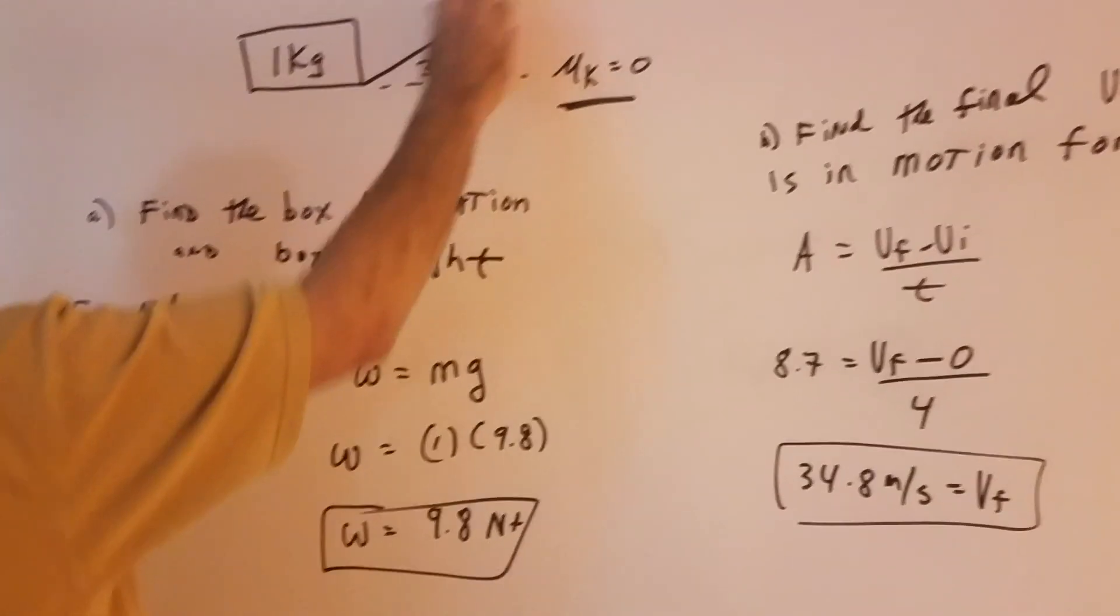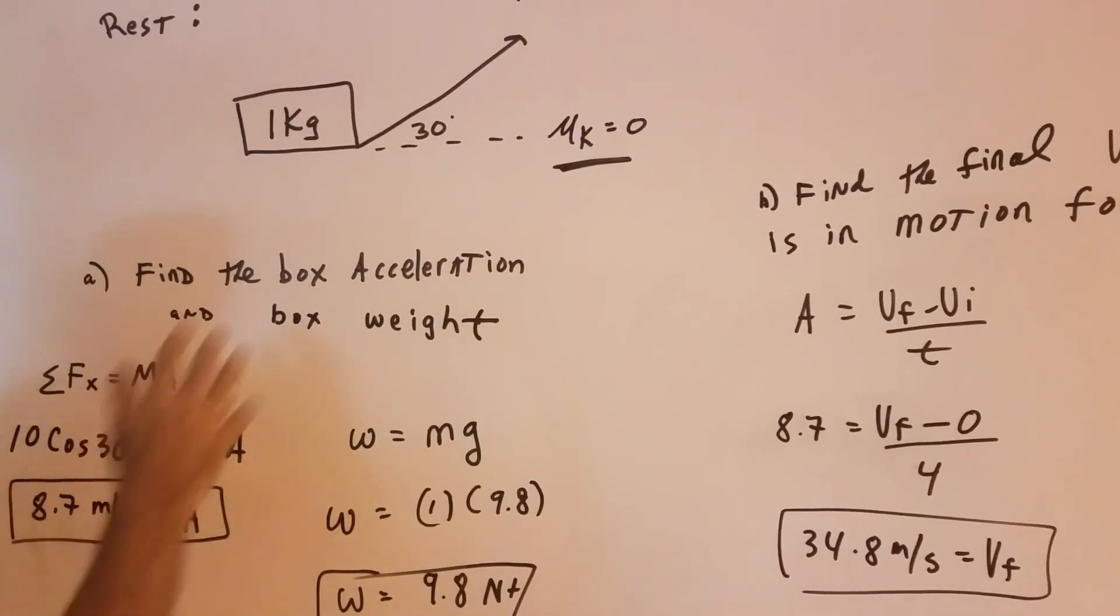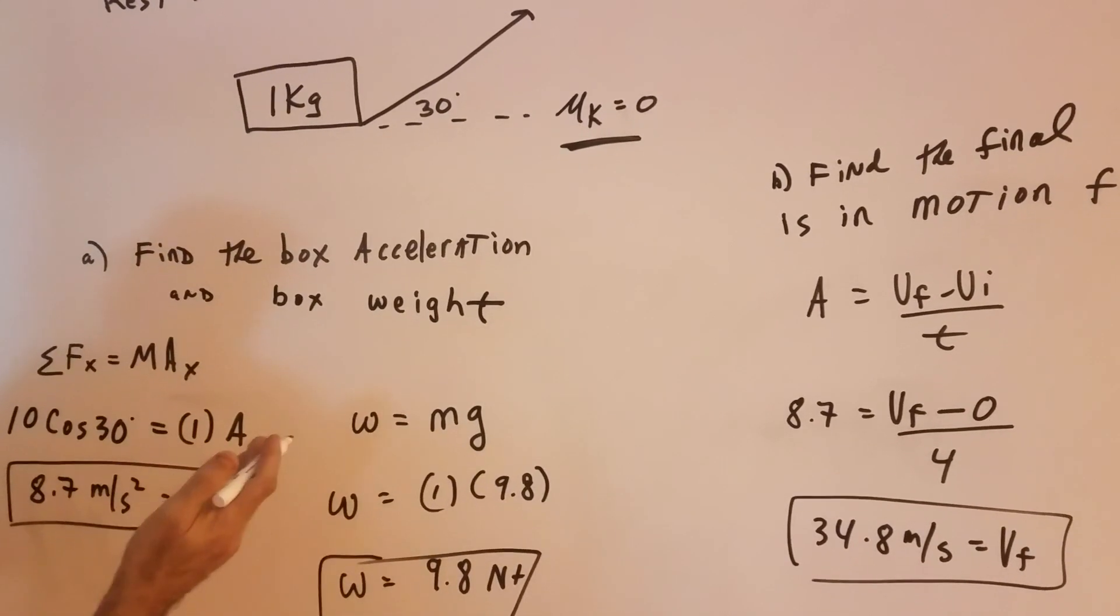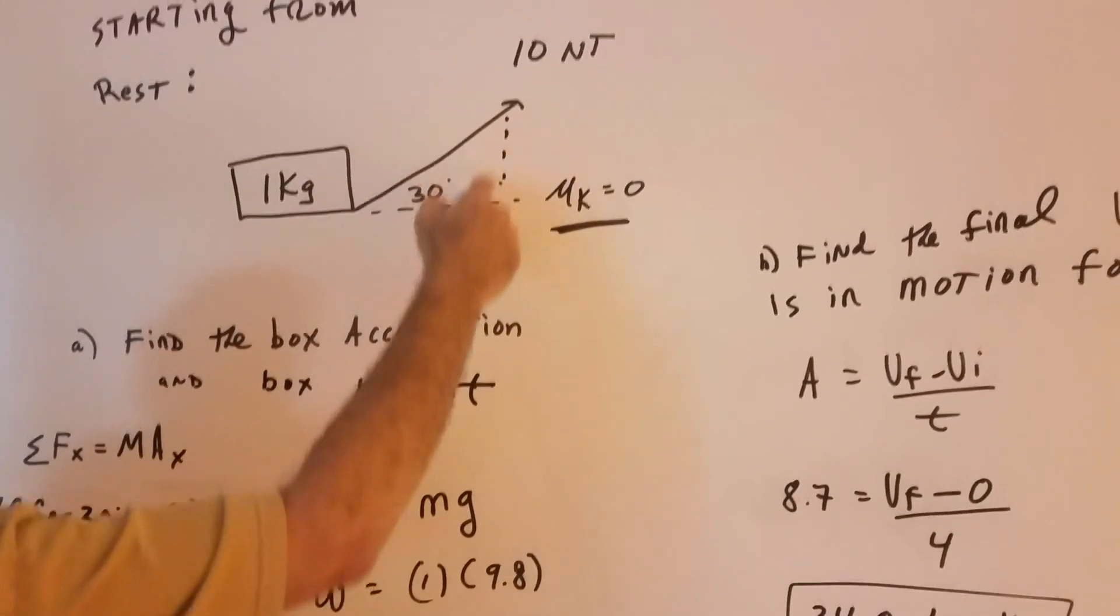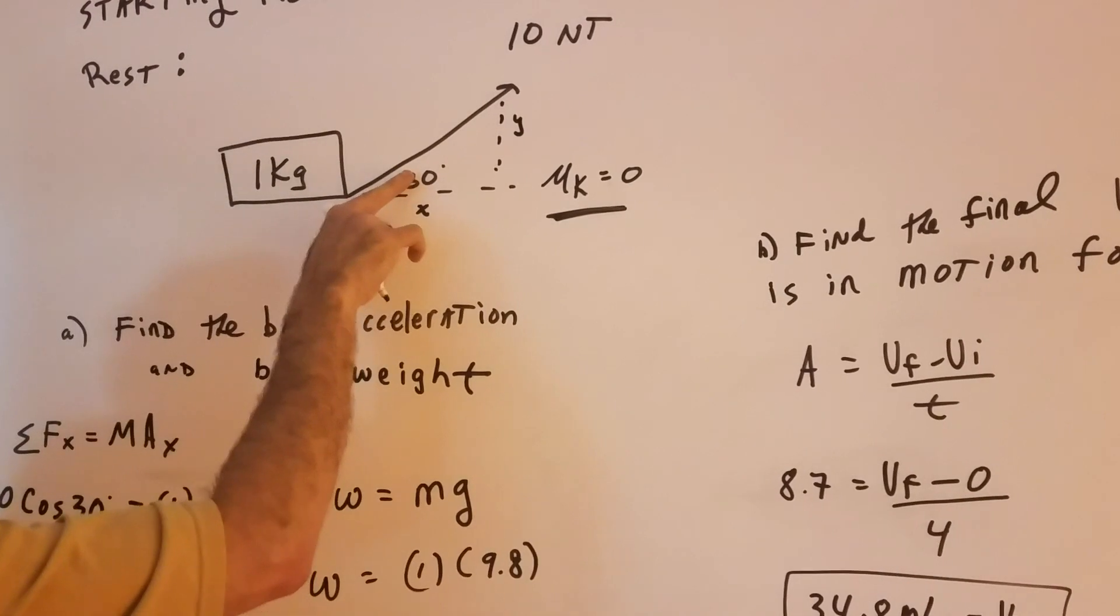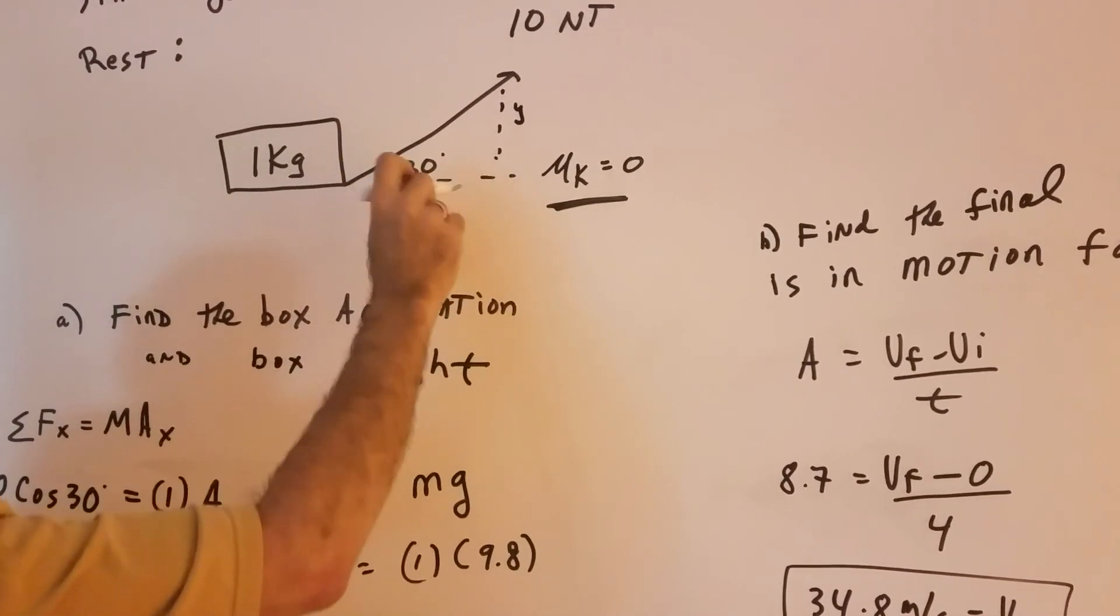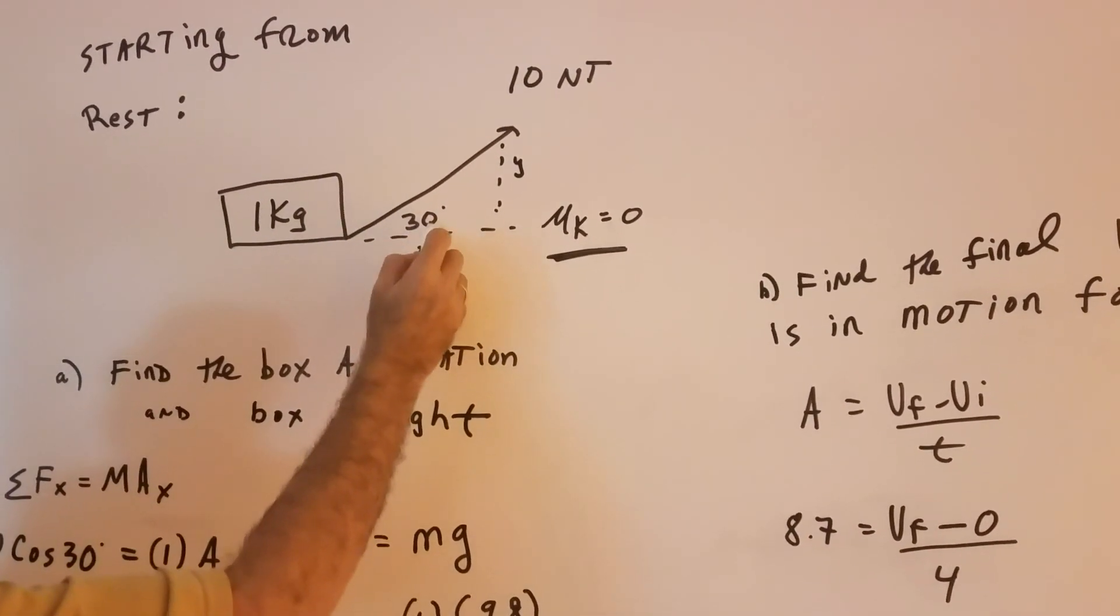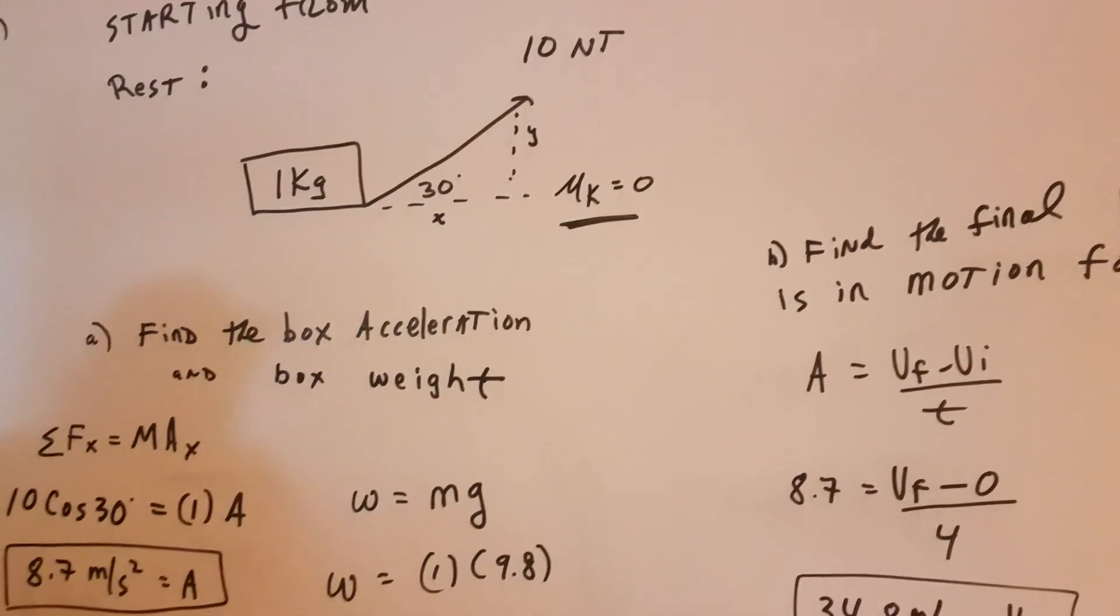Now this force is on an angle. So if it's on an angle, what we got to do is we got to determine are we looking at the horizontal component or the vertical component of this force. All you would do is if you make this into a little triangle, you call this x and this is y. Notice that the box is moving along the x plane. So if it's along the x plane, we're adjacent to the angle. So we're going to be using cosine. And that's something that is very important.